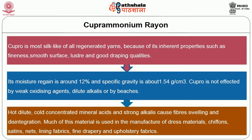However, hot dilute and cold concentrated mineral acids and strong alkalis cause fiber swelling and fiber disintegration. Much of this material is used in the manufacture of voile materials, chiffons, satins, nets, interlining and lining fabrics, fine draperies and upholstery fabrics.